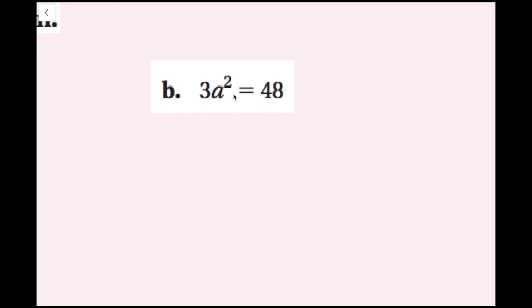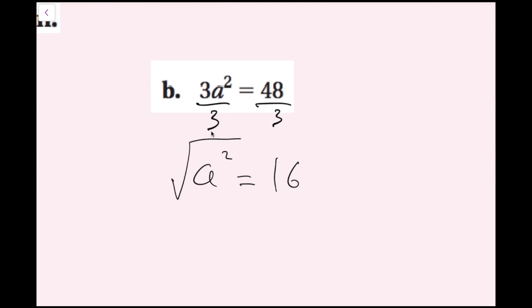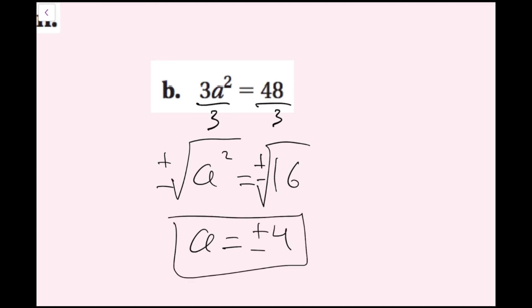For part b: 3a squared equals 48. Since a squared is not alone, I first remove the coefficient by dividing both sides by 3. That gives a squared equals 16. Now I take plus or minus the square root of both sides. The squaring and square root cancel, leaving a. The square root of 16 is 4, so a equals plus or minus 4.